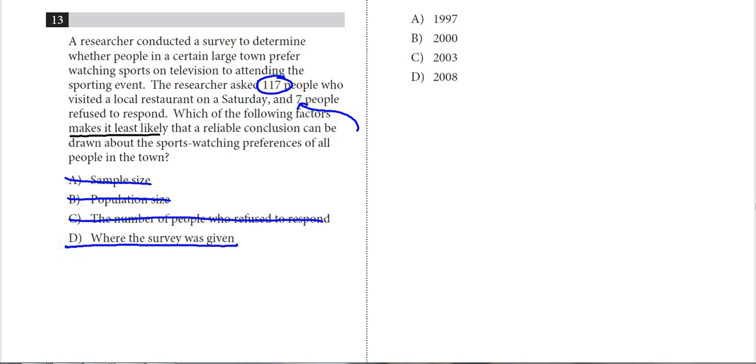So kind of by deductive reasoning, it's where the survey was given. I think the whole problem here was you went to people who were visiting a local restaurant on a Saturday. So right there, you're probably not going to get people who prefer being at a sporting event because they're probably at the event, they're probably not at the restaurant. So the biggest problem with this question is that it was not a random survey. There was no randomness to it. They went to a restaurant and got the information from there, which probably isn't going to give them a good sample of all the people in the town.